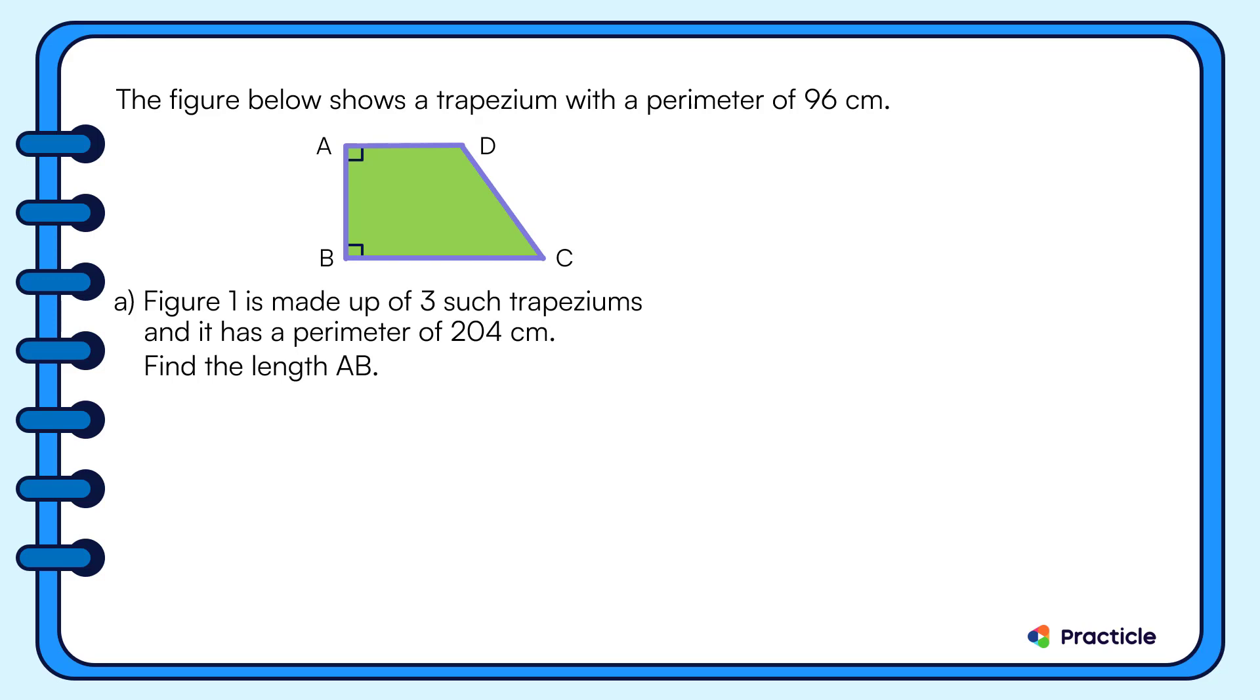Here's part A of the question. We are given that figure 1 is made up of 3 such trapeziums and we know that this figure has a perimeter of 204 centimeters. Let's outline the perimeter of this figure with another color. And what are we supposed to solve? We need to find the length AB.